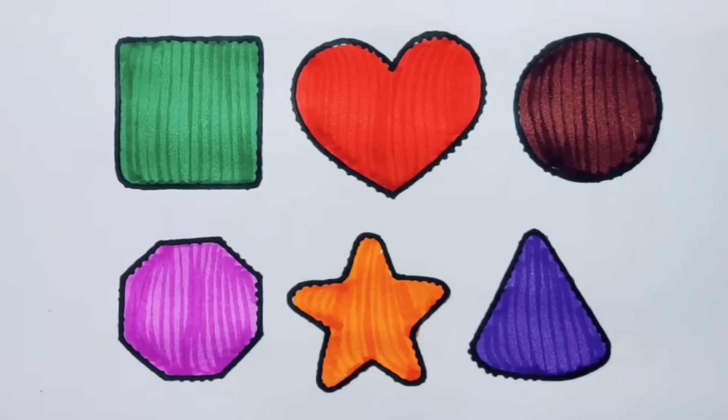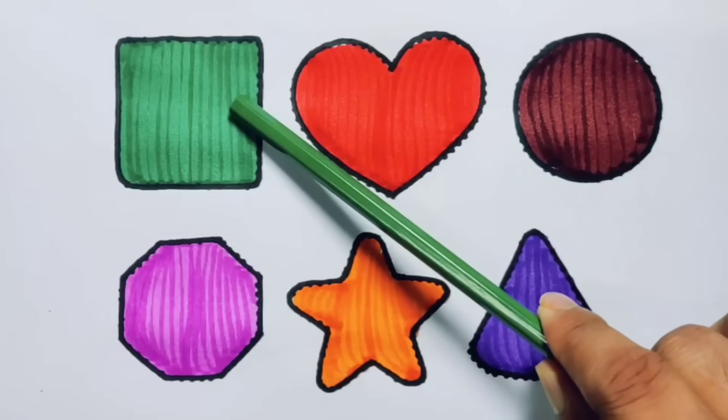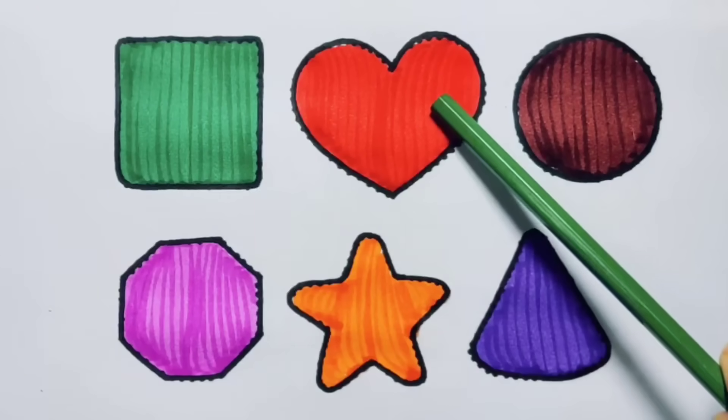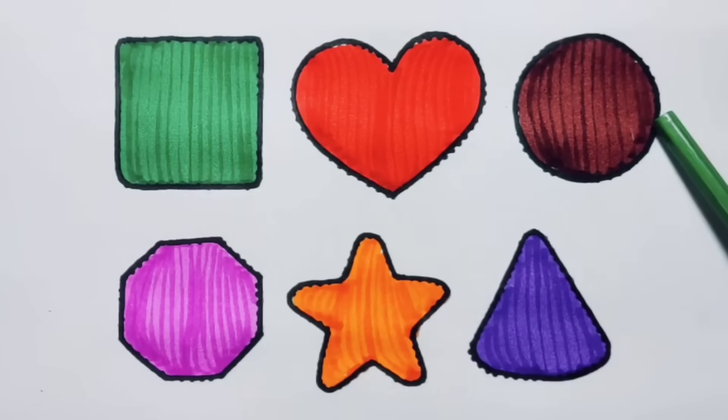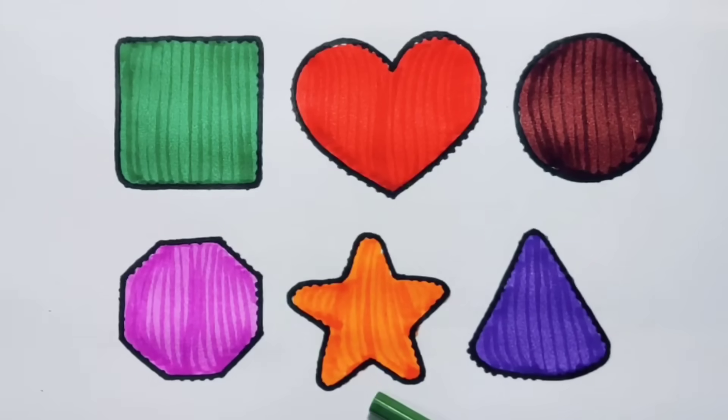What we learned? We learned green color square, red color heart, chocolate color circle, pink color decagon, orange color star, purple color triangle.